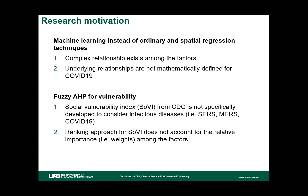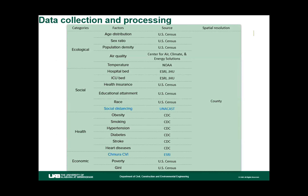Some of you may already know that the CDC has a vulnerability index called SOVI, but it is more oriented towards social vulnerability — there is nothing related to infectious disease or health-related issues. Also, the vulnerability index was developed based on a ranking algorithm that does not include or emphasize relative weights between several factors. So from our literature review, we identified factors that could be relevant and feasible to collect within our timeframe.